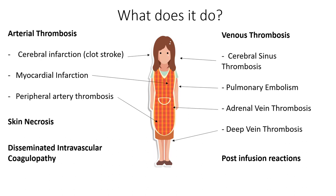So what does it actually do? When you get a thrombotic state, you can get arterial thromboses — cerebral infarctions, MIs, and clots in the legs or wherever else. It can affect the skin causing skin necrosis and reactions, and it can tip the whole coagulation cascade into chaos, causing DIC. It also causes venous thromboses — cerebral sinus thrombosis, PEs, DVTs, and adrenal vein thrombosis, which may present as an acute Addisonian crisis. You can also get post-infusion reactions: chills, rigors, and abnormal feelings of fear or doom.